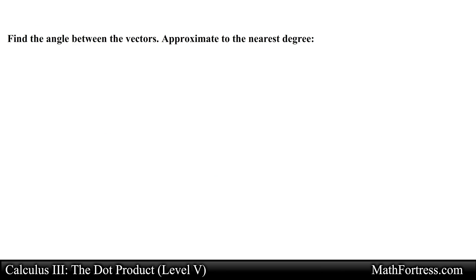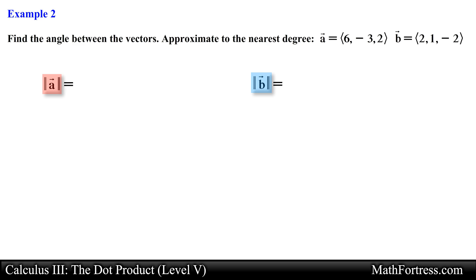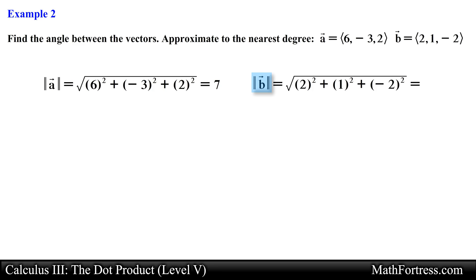Let's try another example. Here we are given two vectors in space and we are asked to once again find the angle between vector A and vector B. Similar to the previous example, let's first find the magnitudes of each vector. For vector A we use the formula for the magnitude of a vector. Simplifying we obtain the magnitude, then we do the same for vector B which yields the following value for the magnitude.